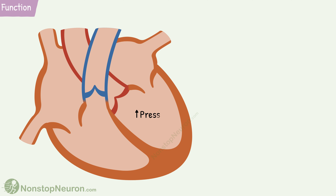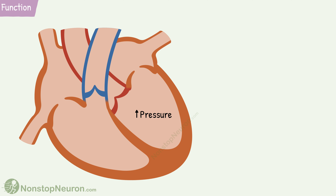During systole, the pressure inside the ventricle increases. This pressure pushes the cusps of the atrioventricular valves and thereby closes the valves. The pressure in the ventricles is so high that it can even push the cusps into the atria.